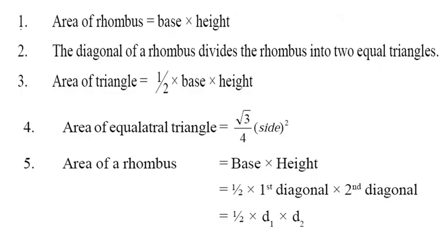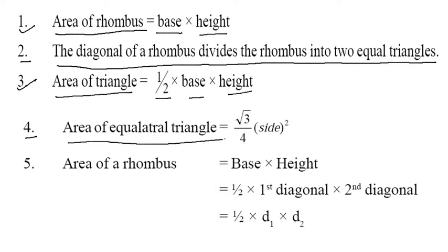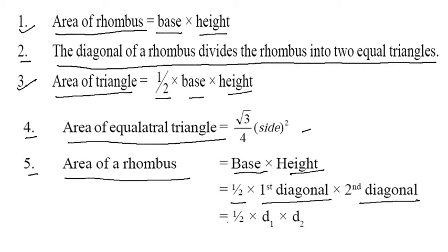What's in your formula? First is area of rhombus, that is base into height. Second, the diagonal of a rhombus divides the rhombus into 2 equal triangles. Third, area of triangle, that is half into base into height. Fourth, area of equilateral triangle, that is under root 3 by 4 side square. Area of rhombus is base into height, or if diagonal is given, 1 by 2 into D1 into D2, where D1 and D2 are the first diagonal and second diagonal.